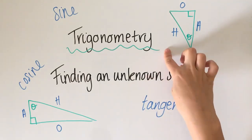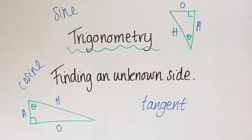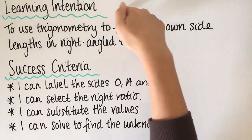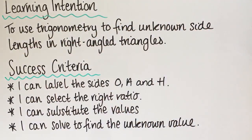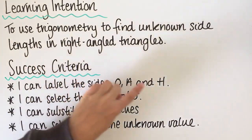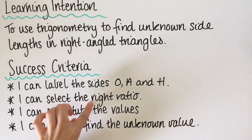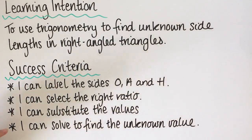In today's lesson we're going to be using trigonometry again, but this time we're going to be finding an unknown side within a right angle triangle. The learning intention today is to use trigonometry to find unknown side lengths in right angle triangles. To do that, you need to label the sides opposite, adjacent and hypotenuse, select the right ratio — sine, cosine or tangent — and then substitute the values and solve to find the unknown value.